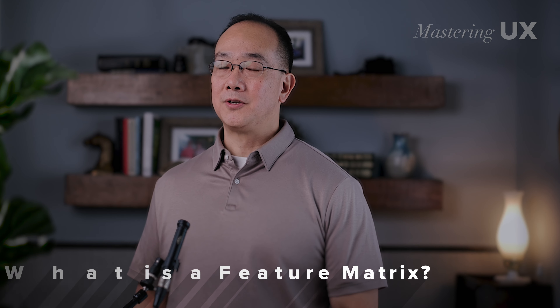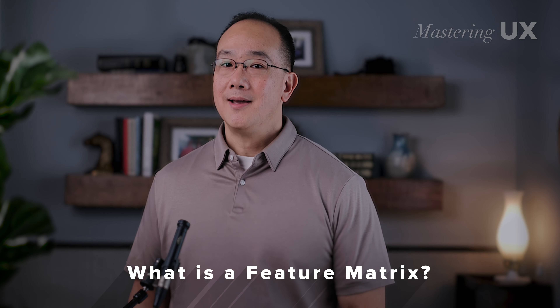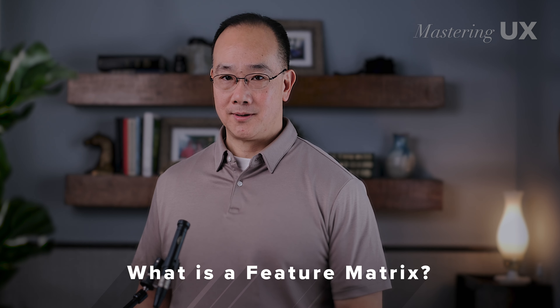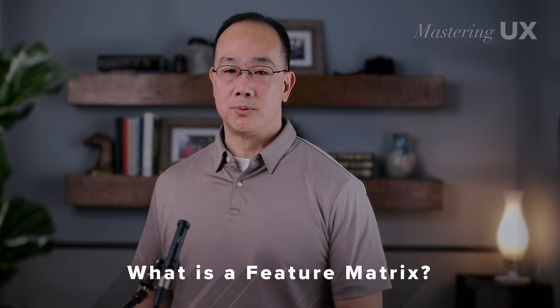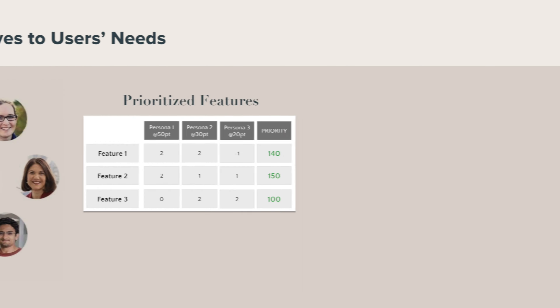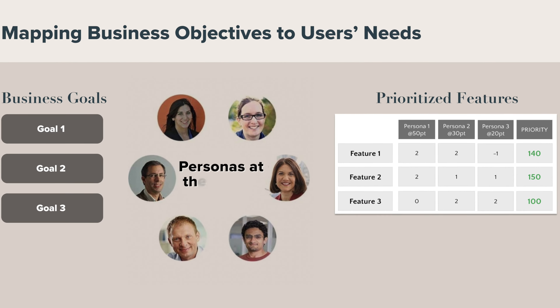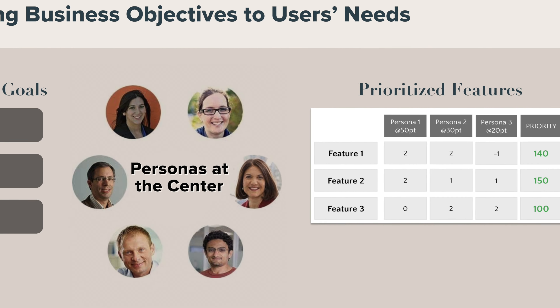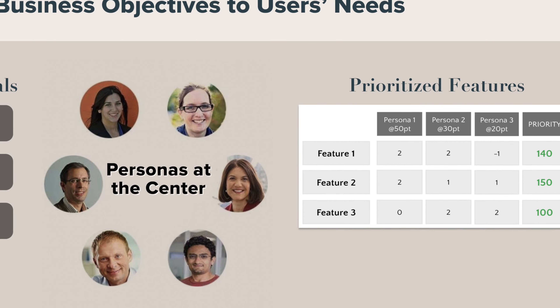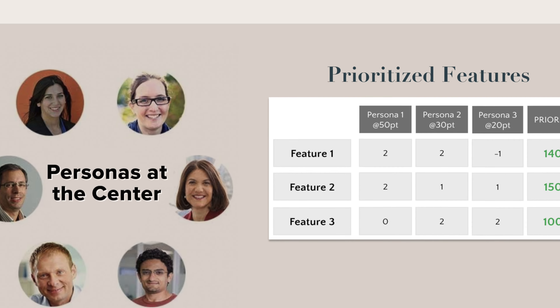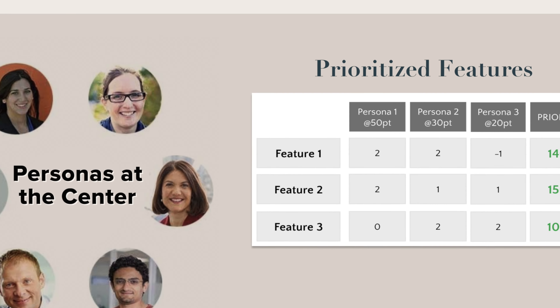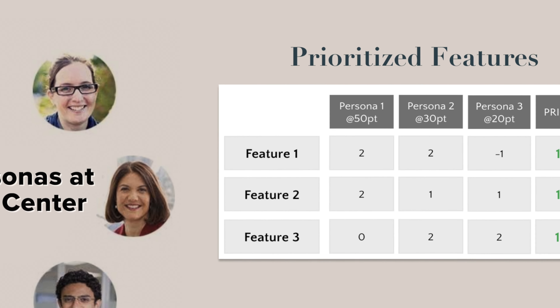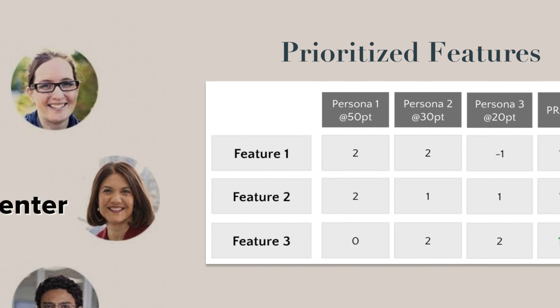So what is a feature matrix? The persona-weighted feature matrix is another tool that complements personas. It's a table or grid that maps out features or requirements against the personas. The matrix helps in prioritizing features based on the needs and goals of the personas, making it easier to make informed decisions during the design and development process.